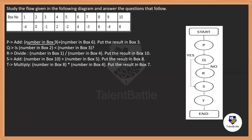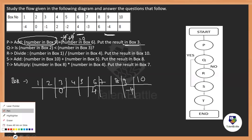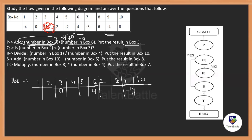To solve this, I'll track boxes 1 through 10. Step P: box[9] = −4 and box[6] = +4, so −4 + 4 = 0. Place 0 in box[3]. Box[3] was −1 originally but now becomes 0.